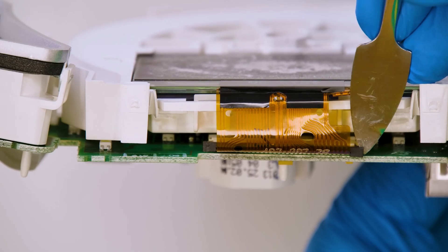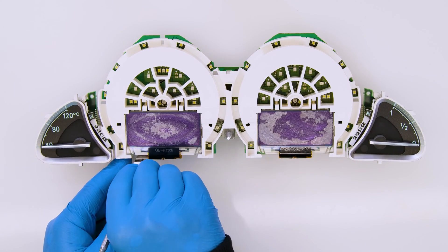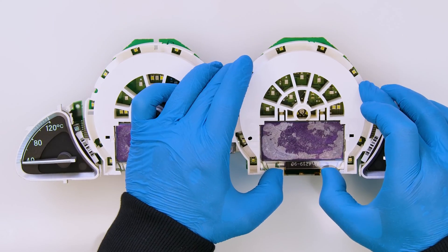Open the connectors of the two FPCs, unplug them and remove the screens.